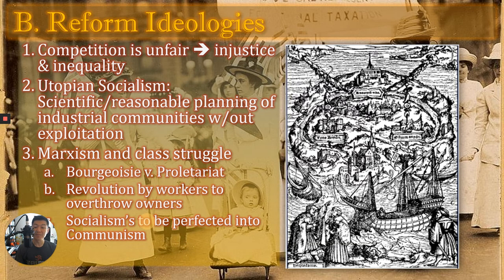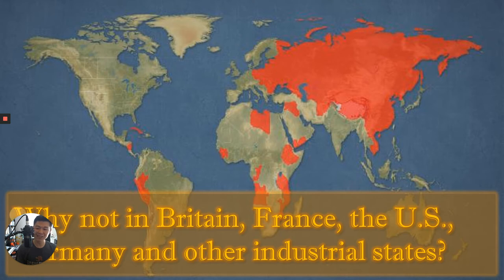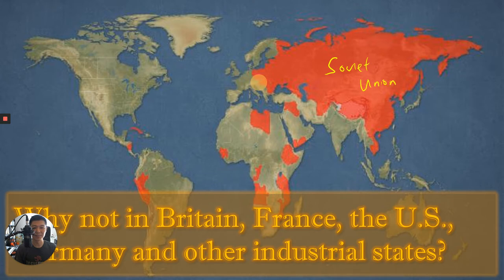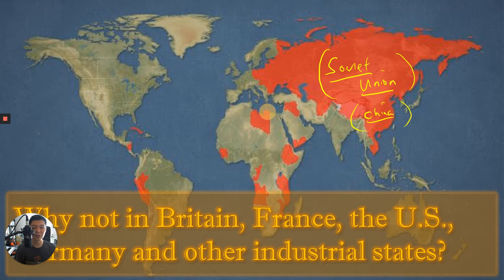Marx and Engels believed communism would happen in true industrial societies—in the United States, Germany, Britain. Instead, as it turned out, it emerged in two very unlikely places: what would become the Soviet Union, and China. Because these were non-industrial or weakly industrial states becoming communist states, communism would have a different characteristic than Marx and Engels initially hoped.